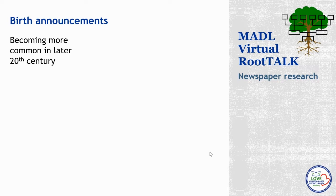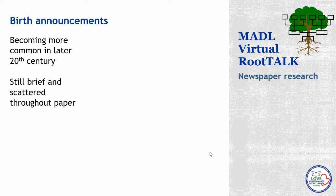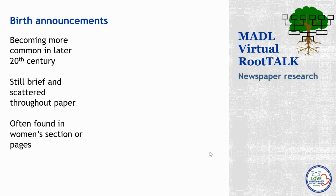As we move into the 20th century, especially in the second half, we start seeing birth announcements more often. They're still going to be brief and scattered throughout the paper, though, not in any one place until really later in the 20th century. However, they often start being found in women's sections or pages of the newspaper. About the mid-20th century, newspapers started organizing material for niche readers and created things called a women's section where information they thought would appeal to women would be located, and they often put birth announcements there.